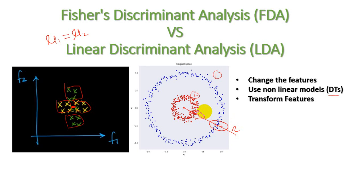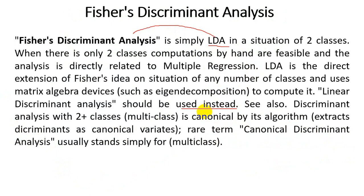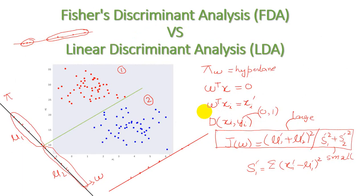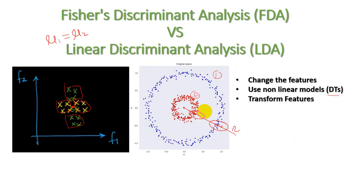This is called transforming features — where you transform your data from one space to another space so that you can simply classify your data. Similarly, when we have more than two classes, we use Linear Discriminant Analysis, where the concept of probability also comes in — how we separate our data in a supervised manner. In the next session we will discuss what Linear Discriminant Analysis is. Hopefully it is clear what Fischer Discriminant Analysis is, how it logically works, and how it relates to LDA.